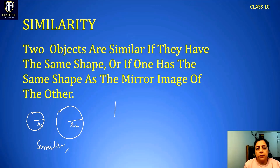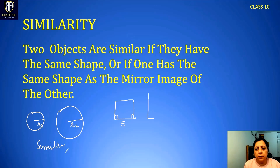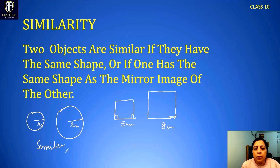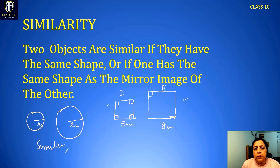Now if we come to another figure, this is a polygon — a square. A square is a parallelogram with all sides equal and all angles 90 degrees. Let's say the square has a side of 5 centimeters, and if I make another square of side 8 centimeters, can we say they are similar? Yes, because their shapes are exactly the same. The basic thing is their angles are equal — all four angles of square 1 are equal to all the angles of square 2. This is a basic requirement of similarity.